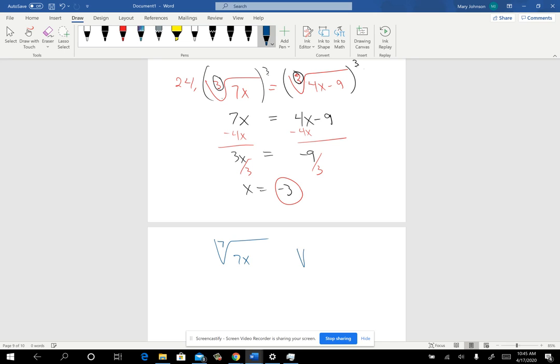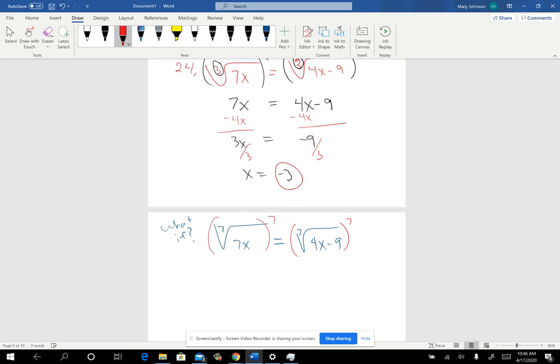Okay, so this is our what if. The only difference would be what we would do is come in and raise both sides to the 7th power. Okay, so we'd have a 7x on this side and a 4x minus 9 again on that side because raising to the 7th power undid the 7th root, and we'd really wind up with the same thing. We'd have 3x being negative 9, and x would again be negative 3. I wanted you just to see that idea. So the extension I'm doing on equations is how to handle when something's not a square root because you already knew how to do square roots. We did that on the previous test.